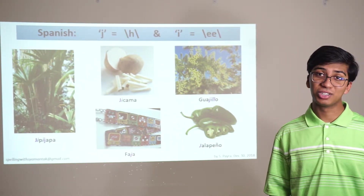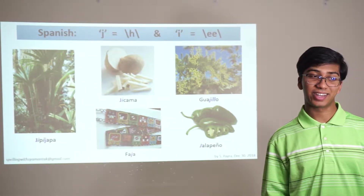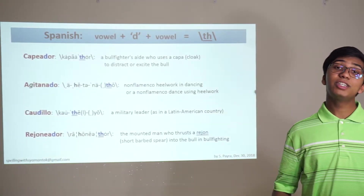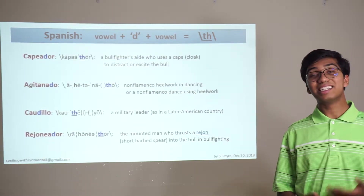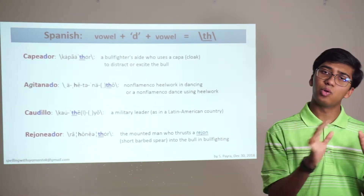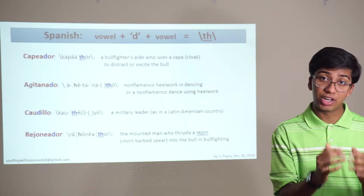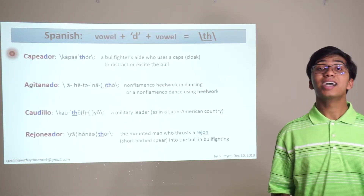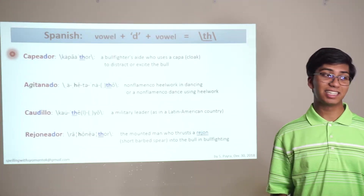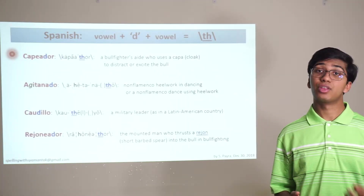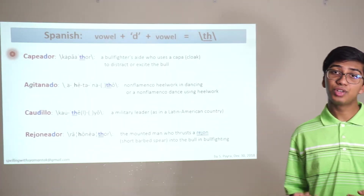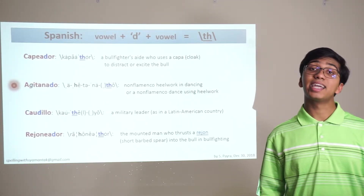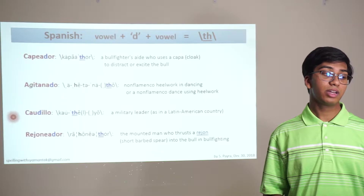For some bonus words, note down the word aparejo — a pack saddle made of stuffed leather or canvas. Another interesting pattern in Spanish is that when you have some vowels sandwiching a TH sound, that's usually spelled with a D. For example, the word capeador — it's not a hard D like capeador, it's a softer D — and you know it's going to be spelled with a D and not a TH. Same thing with agitanado, caudillo, and rejoneador.